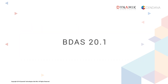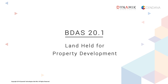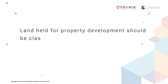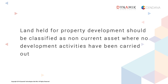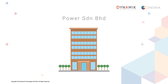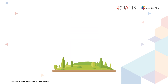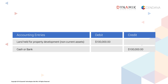Firstly, let's go through BDAS20.1, which is to record Land Held for Property Development. Land Held for Property Development should be classified as a non-current asset where no development activities have been carried out. For example, Power Sandiran Berhad purchases Land Held for Property Development at $100,000. The accounting entries for this vendor bill transaction will be: debit the account for Land Held for Property Development with $100,000, and credit cash or bank with the same amount.